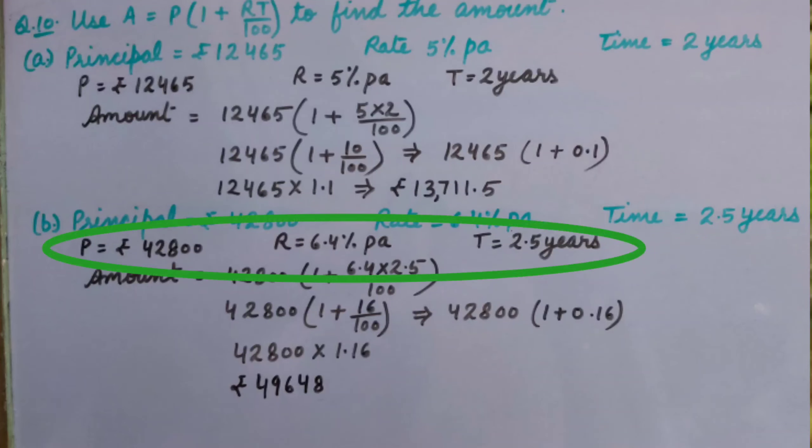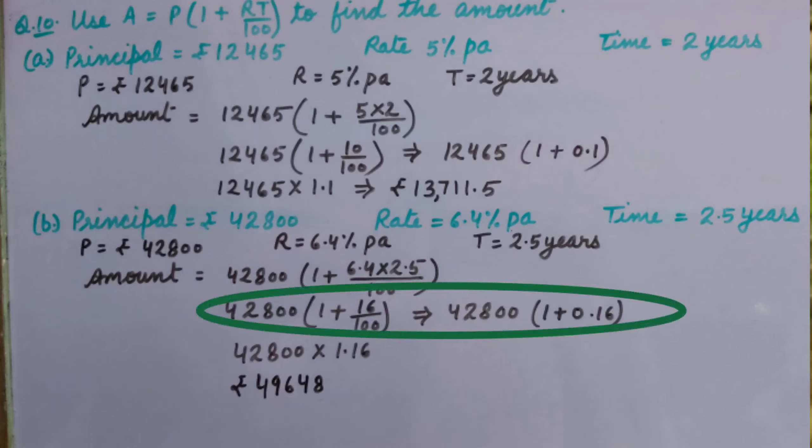That is 42,800 × (1 + (6.4 × 2.5)/100). Solving, we get 42,800 × 1.16, which equals rupees 49,648.